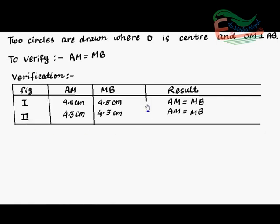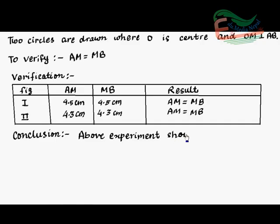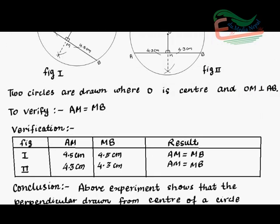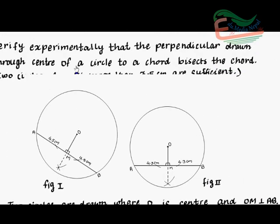Next, conclusion. This conclusion is: above experiment shows that perpendicular drawn from or drawn through center of a circle to a chord bisects the chord. In this way, we verify experimentally that the perpendicular drawn from or drawn through center of a circle to a chord bisects the chord.